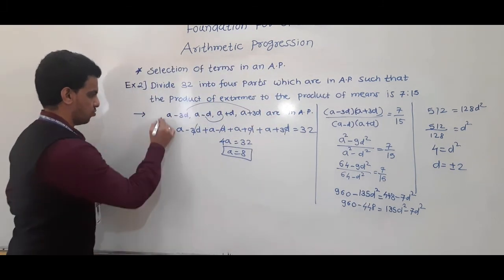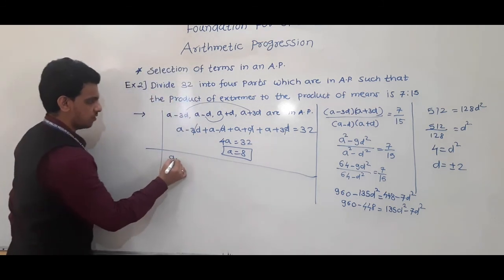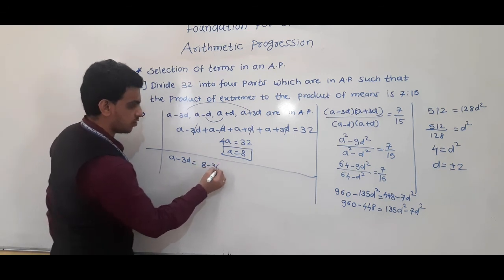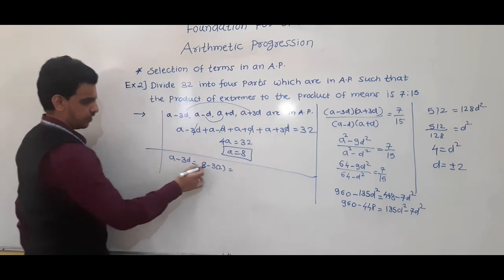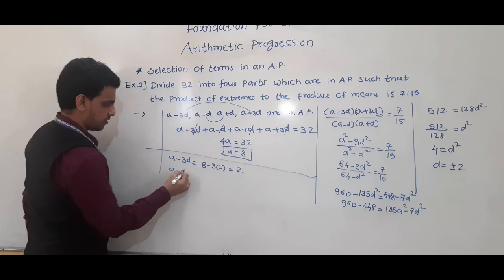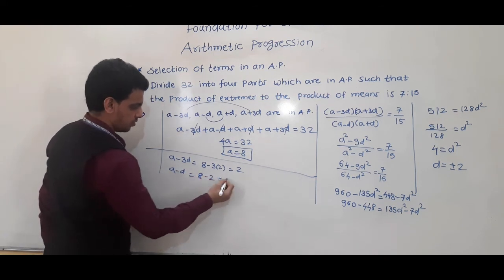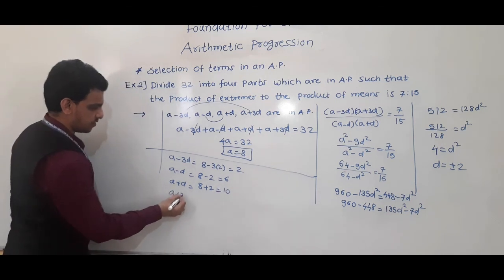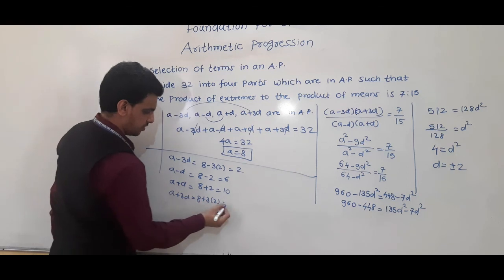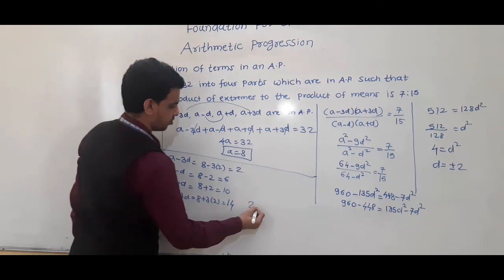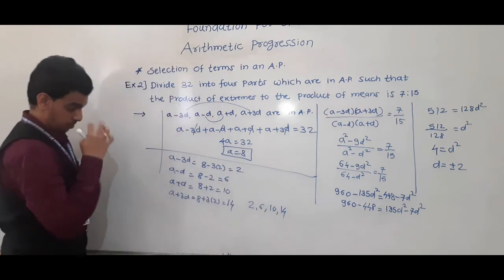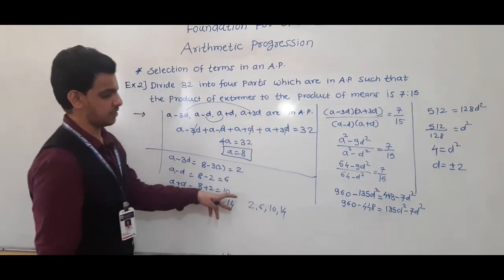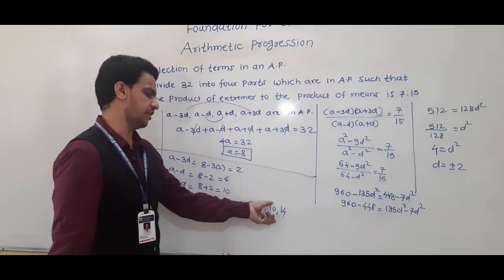With d = ±2 and a = 8, the four terms are: a − 3d = 8 − 6 = 2, a − d = 8 − 2 = 6, a + d = 8 + 2 = 10, a + 3d = 8 + 6 = 14. So the terms are 2, 6, 10, 14. Taking d = −2 gives the same numbers in reverse order: 14, 10, 6, 2.